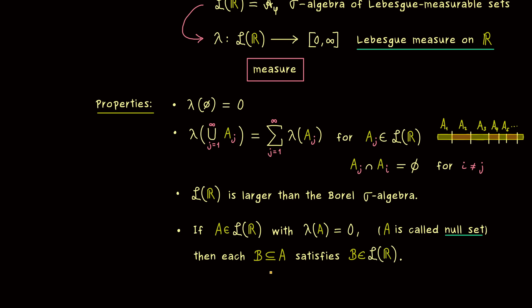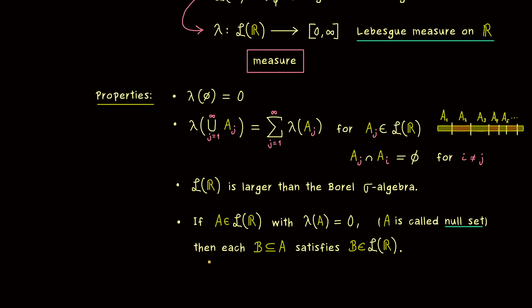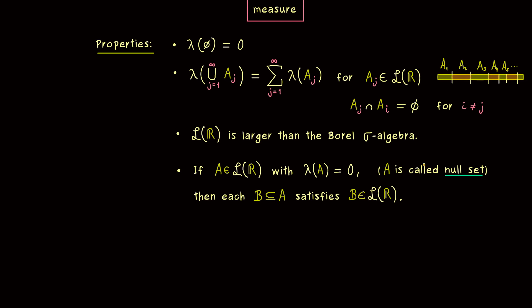Hence, B here is also in the Lebesgue sigma algebra. And indeed, this is the important difference we have from the Borel sigma algebra. In fact, we will see that this property is really helpful for defining and calculating integrals. But before we do that, let's first discuss two more properties of the Lebesgue measure.